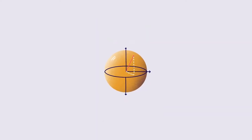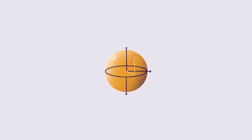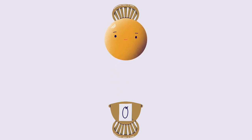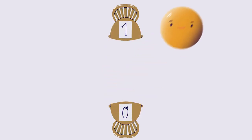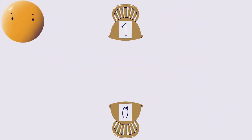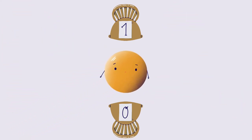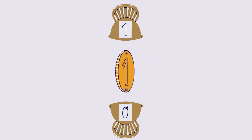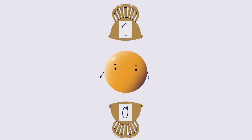Quantum computers work quite differently. They do not work with electrical states but use qubits, or quantum bits. Qubits are special quanta which we can influence purposefully. Qubits can be in state zero and one at the same time, but also in an infinite number of states in between. This effect is called superposition. In the quantum world, it is like a coin spinning very fast — it is neither heads nor tails until we stop it. It's the same with qubits, which only determine whether they are zero or one when they are measured.